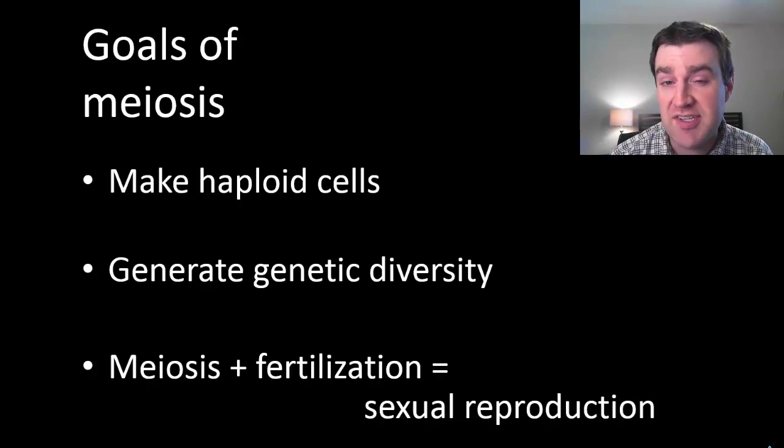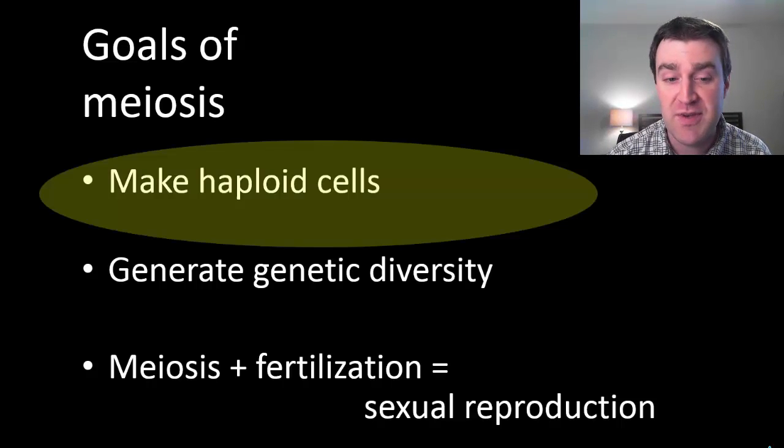And in the process we're going to see that meiosis generates a lot of genetic diversity in those end cells as well, but this video is mostly just going to focus on how you go from diploid to haploid. I'm going to talk about genetic diversity in the second video.